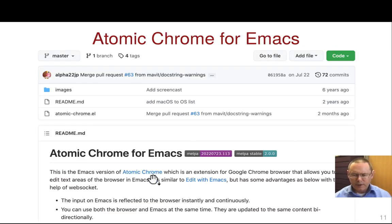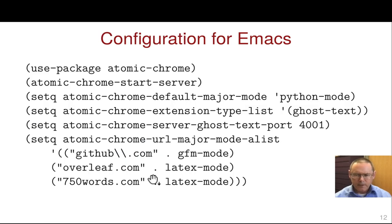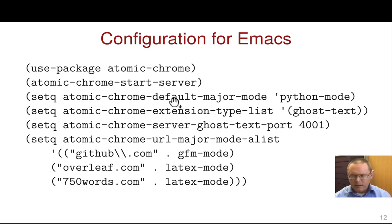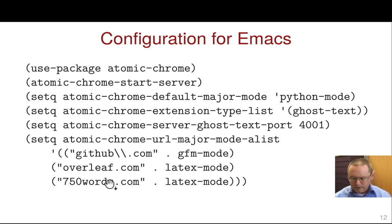This is the GitHub site for Atomic Chrome. Atomic Chrome is available for installation through MELPA. This is my configuration for Atomic Chrome. I have it set up so the server starts whenever I log in, and the default major mode is Python to deal with Jupyter Notebooks and Colab Notebooks. I also have the major modes for other websites defined below.